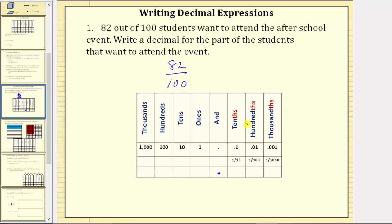Which means to express 82 hundredths as a decimal, we will need to use two place values to the right of the decimal point. We will need to have an eight in the tenths place value and a two in the hundredths place value. And we normally place a zero in the ones place value.